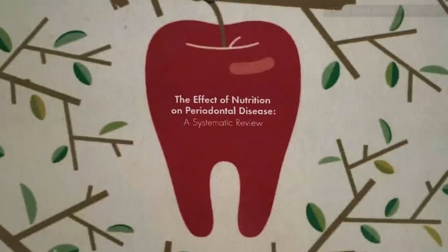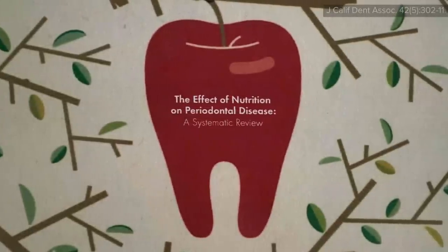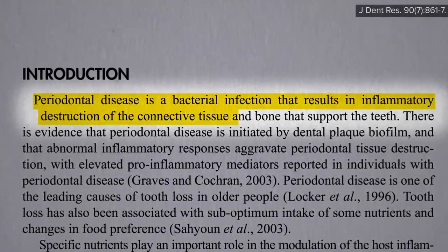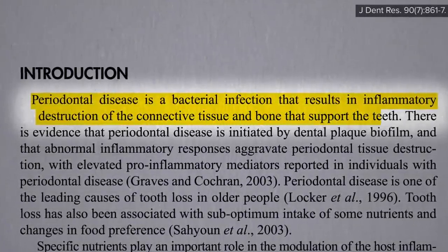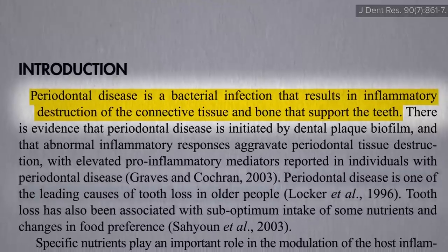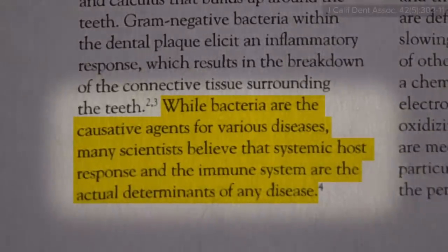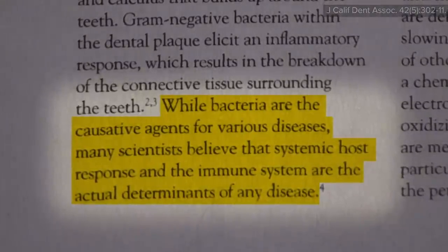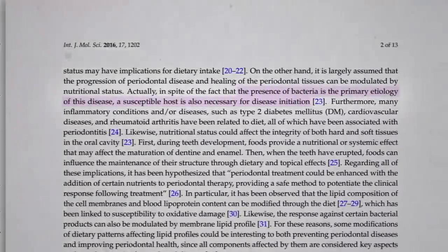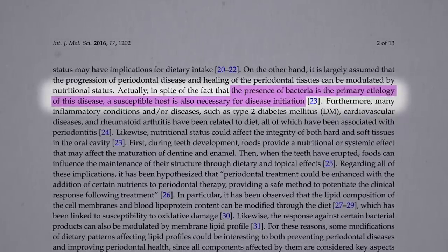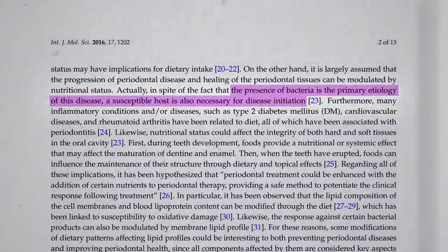What's the effect of nutrition on periodontal disease? Periodontal disease is a bacterial infection that results in inflammatory destruction of the connective tissue and bone that supports the teeth, and is therefore one of the leading causes of our teeth falling out. Like most infections, though, how our body responds may play a critical role. Yes, the presence of bacteria is the primary cause, but a susceptible host is also necessary for disease initiation.